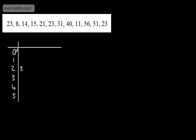If I have 8, we've got 0 tens and 8 units. 14, I've got 1 ten and 4 units. 15, 1 ten and 5 units. 21, I've got 2 tens and 1 unit. 23, we're going to have 2 and 3. 31, I'm going to have 3 and 1.